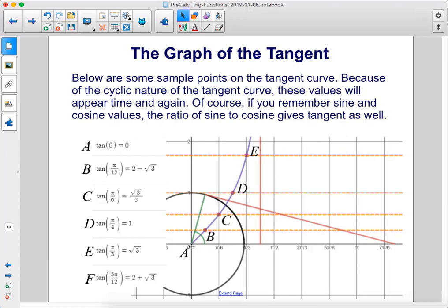At point A, tan(0) = 0. Tan(π/12) = 2 - √3. Tan(π/6) = √3/3. Tan(π/4) = 1. Tan(π/3) = √3. And not shown, but F is up here: tan(5π/12) = 2 + √3.